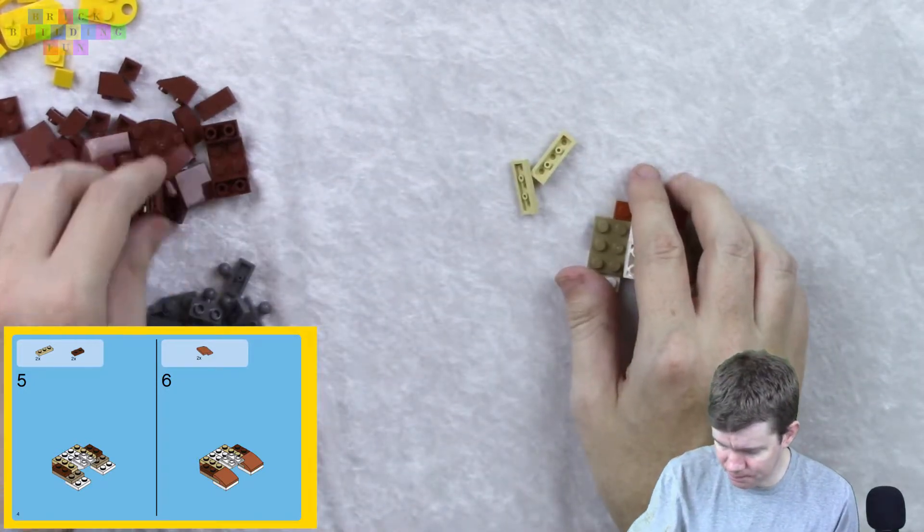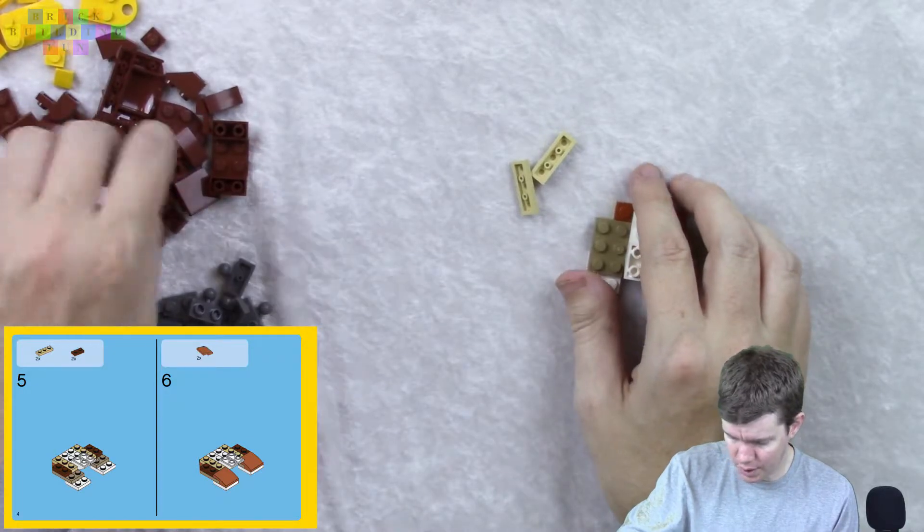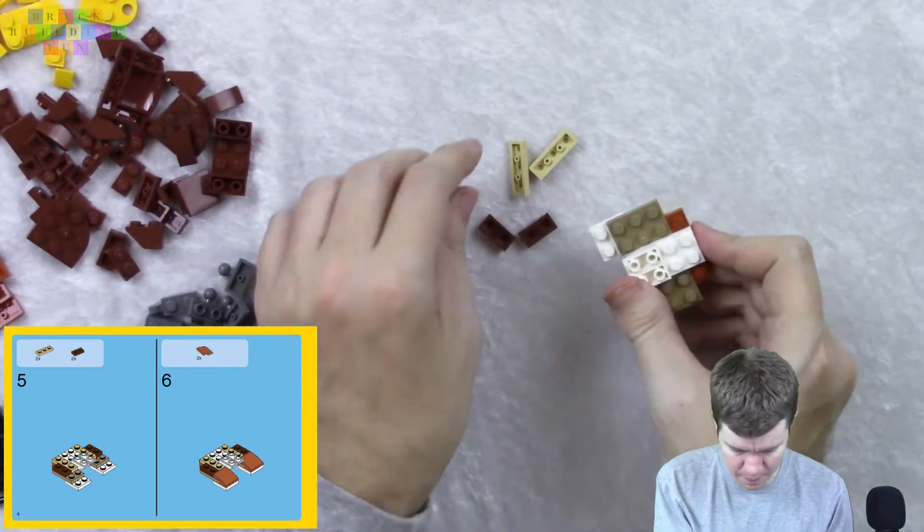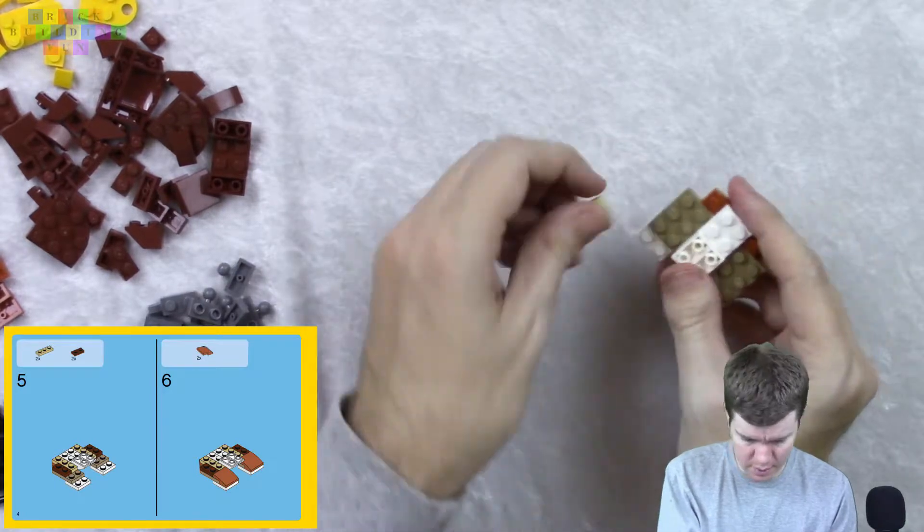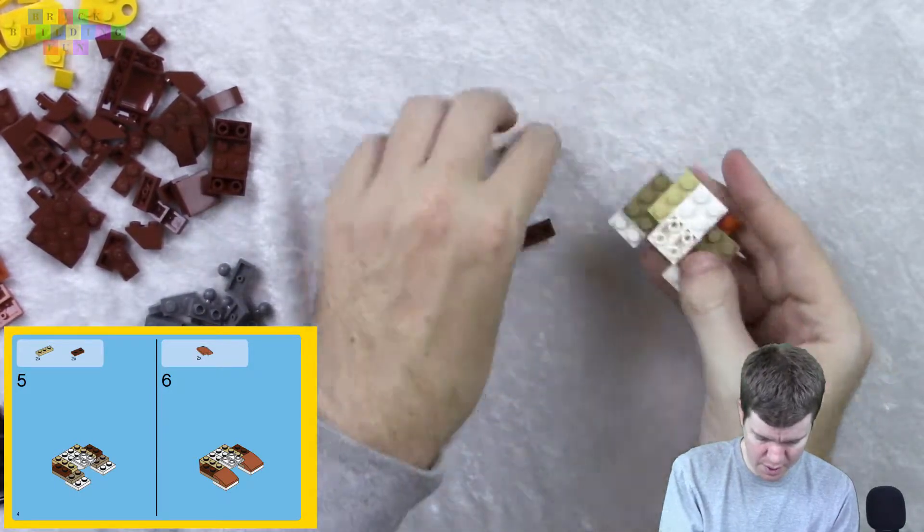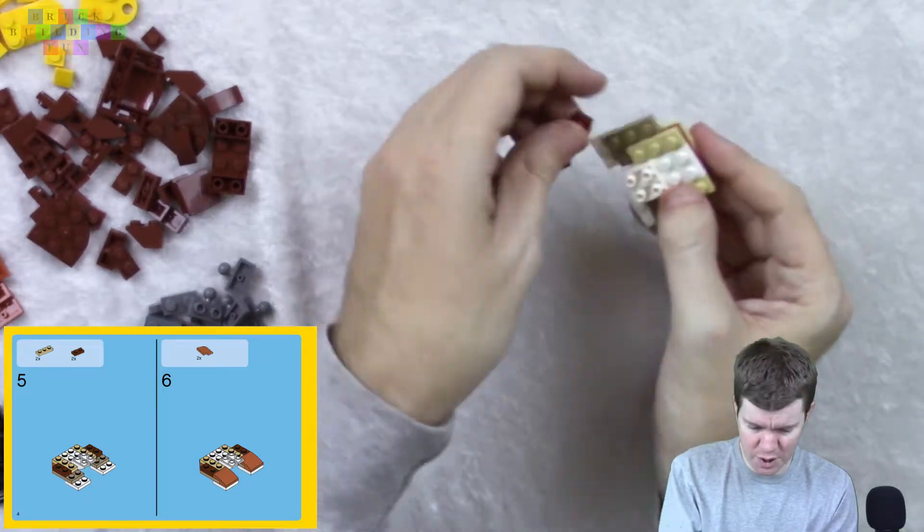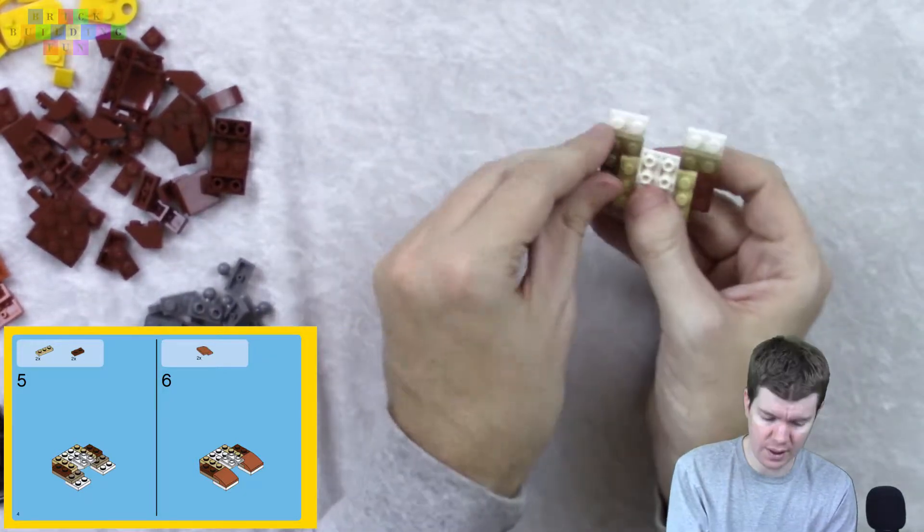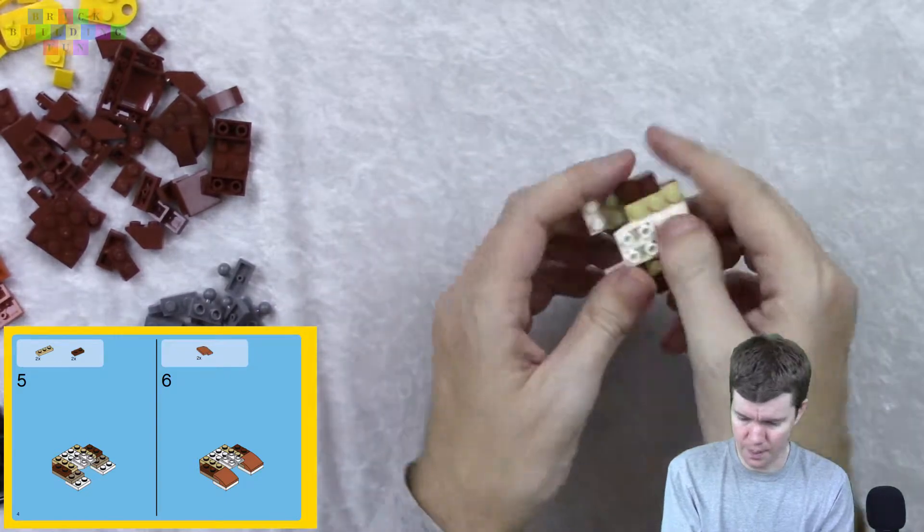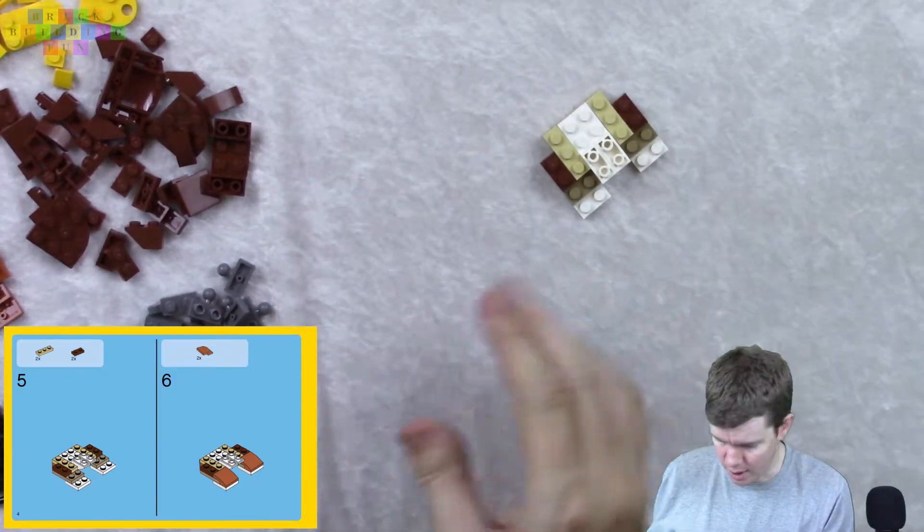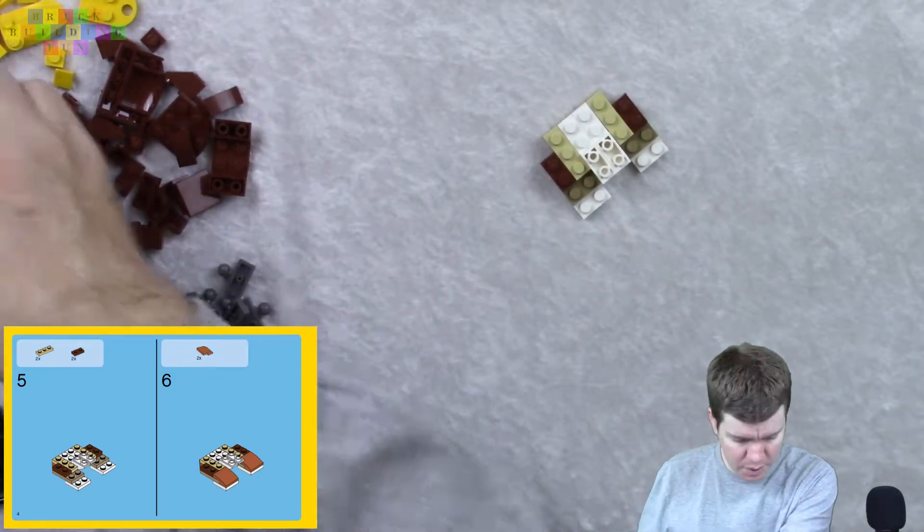Two of these, and two of these brown pieces here. Okay, this goes across here, so that gets secured. These aren't really, these are more display pieces, I think, than anything else. So, they probably don't need to be too incredibly stable.